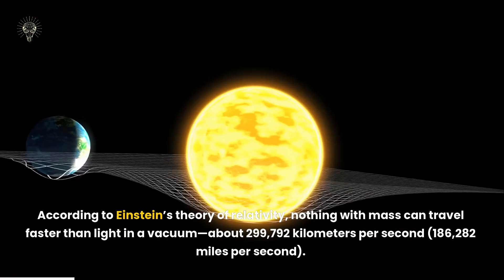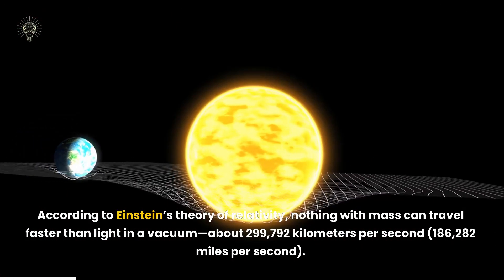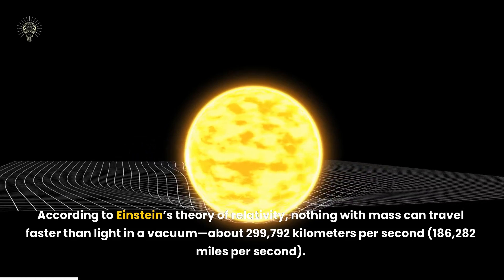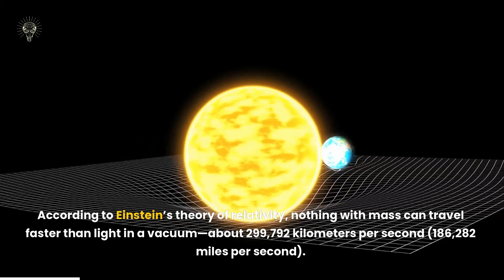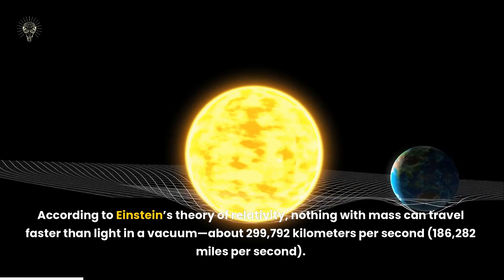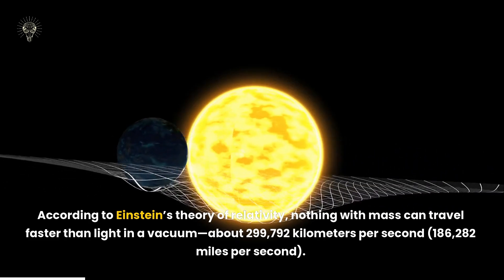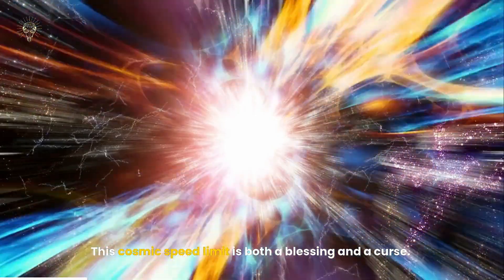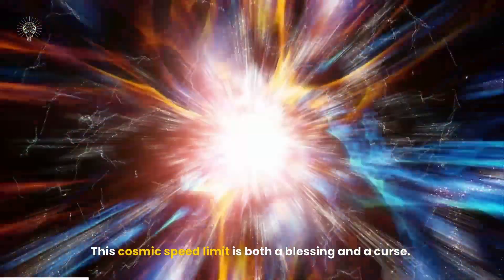The speed of light. According to Einstein's theory of relativity, nothing with mass can travel faster than light in a vacuum. About 299,792 kilometers per second, 186,282 miles per second. This cosmic speed limit is both a blessing and a curse.